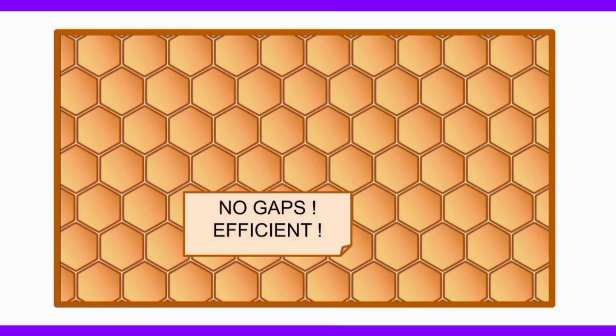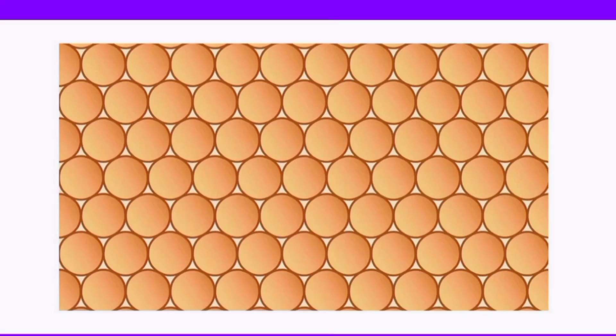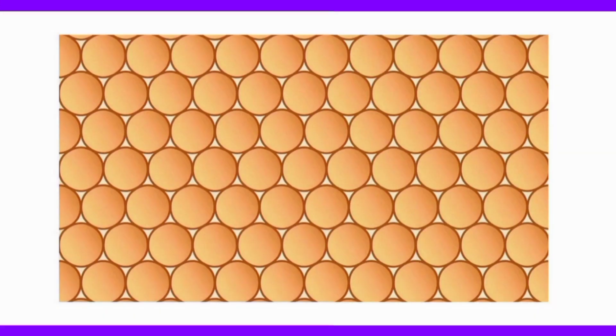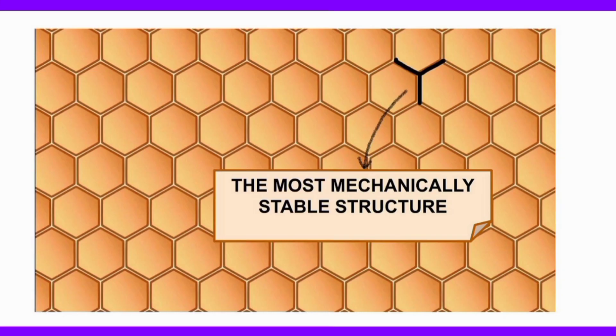The hexagonal cells don't leave interspaces. In reality, honeybees don't build hexagonal walls — they just build circular walls. The body heat of the bees melts the circular walls, transforming them into more stable hexagonal walls. The Y shape, as said before, is the most mechanically stable structure. That's all about it.